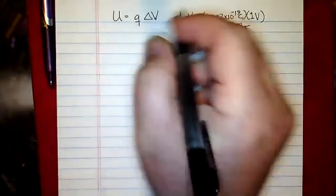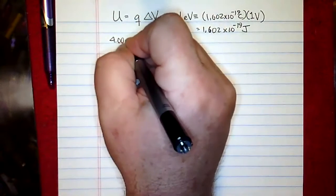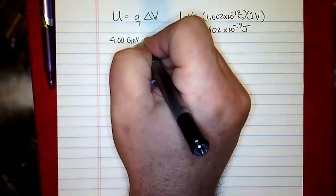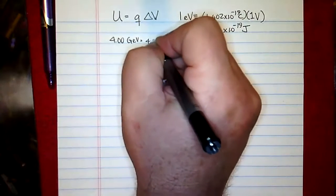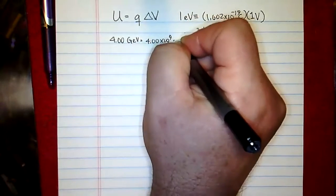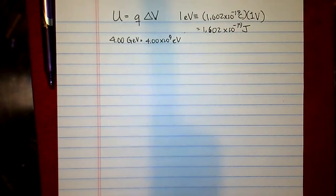A giga electron volt, as in 4.00 GeV, is equal to 4.00 times 10 to the ninth electron volts — that's just the standard SI metric prefix.